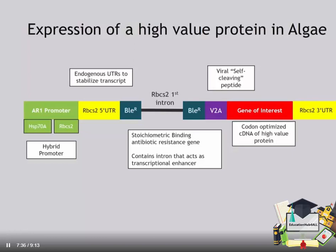This antibiotic resistance gene itself contains the first intron of RBCS2, which acts as a transcriptional enhancer. Following this antibiotic resistance gene is a viral self-cleaving peptide. This peptide causes the production of two separate peptides — the antibiotic resistance gene product and the gene of interest — from a single mRNA. Finally, we have the gene of interest shown in red, which has been codon optimized, generating high translational efficiency.